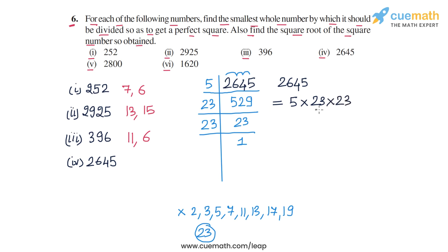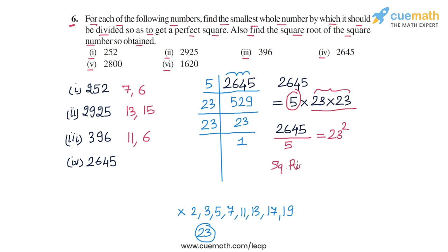Pairing up the prime factors of 2645, we have a pair of 23, but the 5 is left unpaired. So we divide 2645 by 5, which gives 23 × 23 = 23². The square root of the resulting number is 23. So we divide 2645 by 5 to get a perfect square, and the square root of the square number obtained is 23.